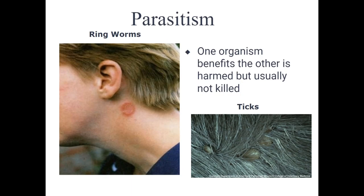To recap everything we've taken so far: we've covered ecology — the study of living things — and the six major classifications starting with the individual, then a population, then a community, then an ecosystem, then a biome, and then the biosphere. We've taken the three main interactions in an ecosystem: competition, predation, and symbiotic relationships. And we've taken the three main types of symbiotic relationships: commensalism, mutualism, and parasitism, plus the subtype brood parasitism, where 'brood' relates to young offspring or reproduction. That is lesson 2.1 — Principles of Ecology.